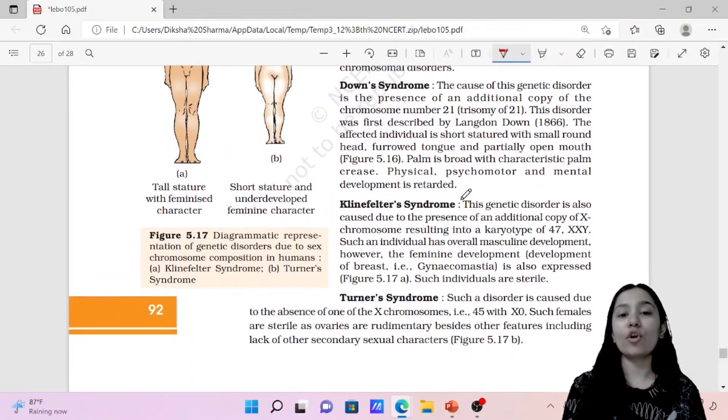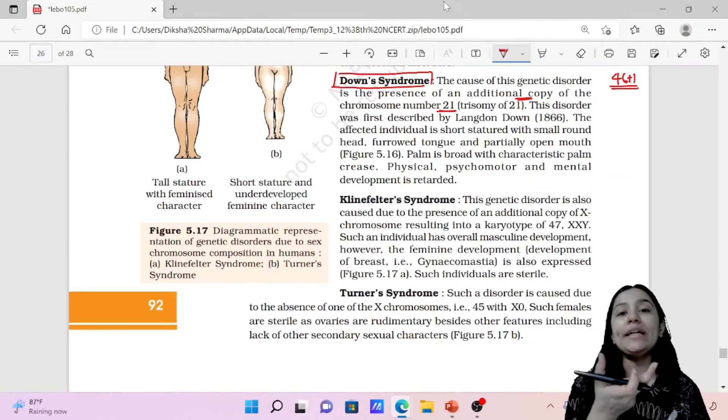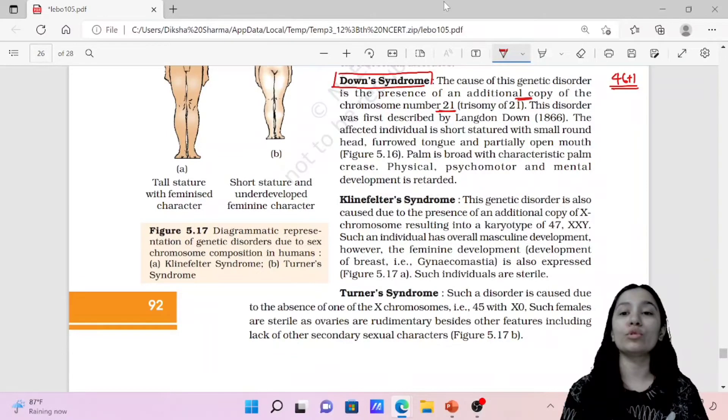First disorder is Down syndrome. It is 46 plus 1, an example of polyploidy. The cause of this genetic disorder is the presence of an additional copy of the chromosome at number 21. So there is additional chromosome added, which we call trisomy 21. Down syndrome is also known as trisomy 21. In 1866, this disorder was discovered by Down. The affected individual is short stature, height is less, small head, tongue protrudes.